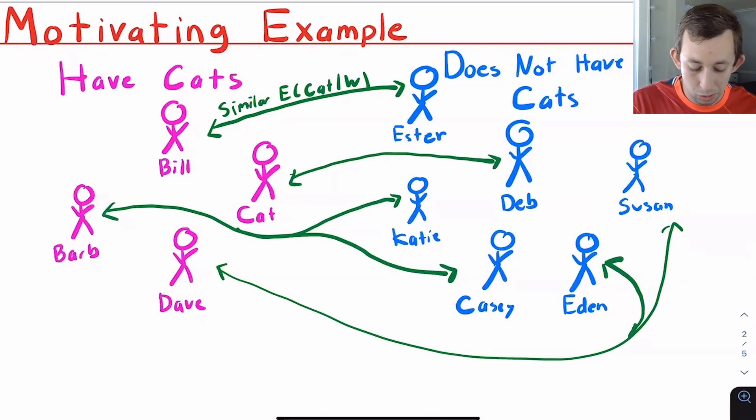For Barb, maybe Barb has two people that are closest to her in terms of her propensity score. That's totally fine. We can do that as well. So we're going to match Barb to both Katie and Casey.